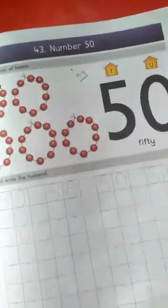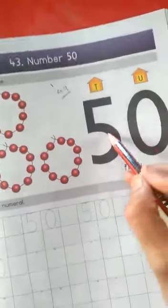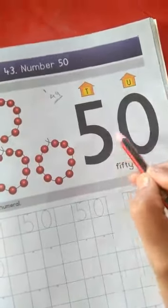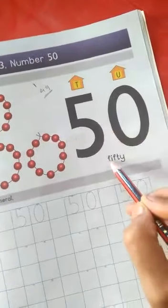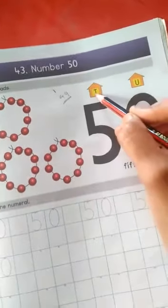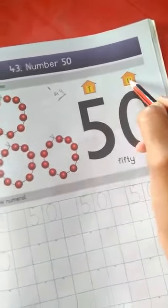This is number 50. 50, 50, 50, 50, 50, 50. T means tens, U means units.